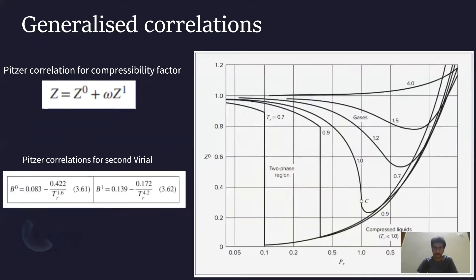There is a third method called the generalized correlations. Generalized correlations are useful especially when there is not much experimental data available and when we need to interpolate and extrapolate. Generalized correlations are developed for the compressibility factor Z in the form: Z = Z⁰ + ω·Z¹. We have charts for Z⁰ as well as Z¹. At a given Tr and Pr, we can calculate Z: since ω is constant for a given fluid, knowing Z⁰, ω, and Z¹ allows us to calculate Z.